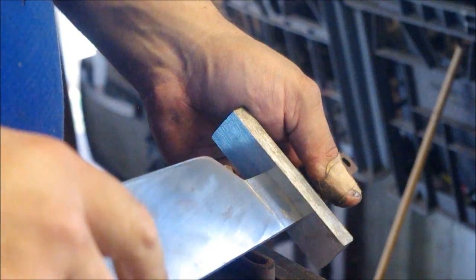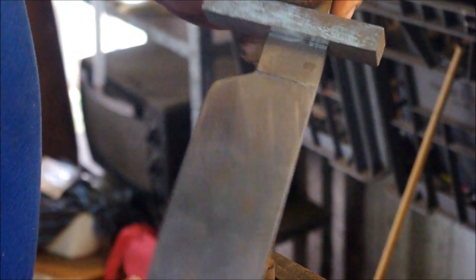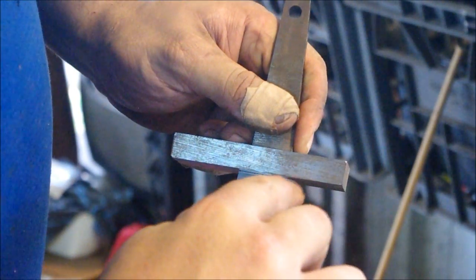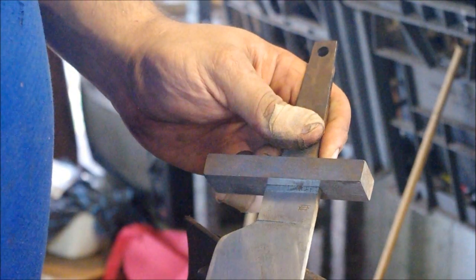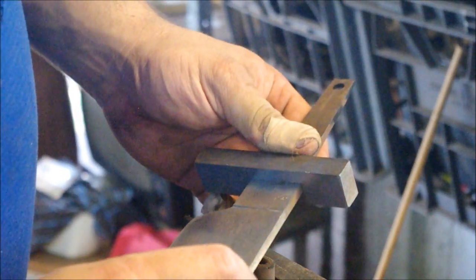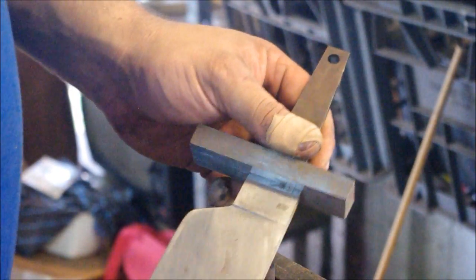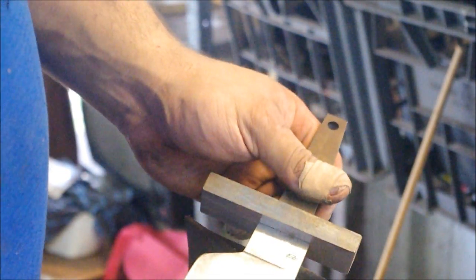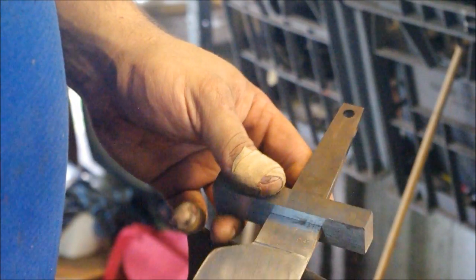And now what should happen is that I should be able to try and wiggle that guard, and it's not going to move. And that's the best fit up you're going to get. Now, what I'm looking for here is gaps on the side of the blade, which I can't see any visibly, gaps between the guard and the shoulders, which again, not visible, and then gaps top and bottom, which I know there are none. So that's a nice tight fit up, and that's how you friction fit.